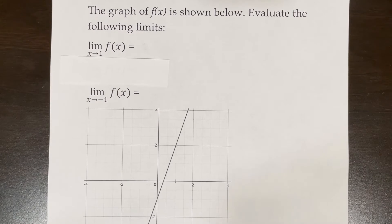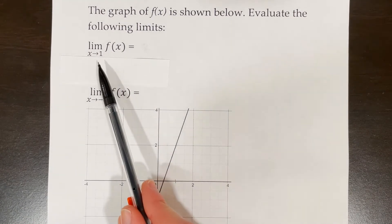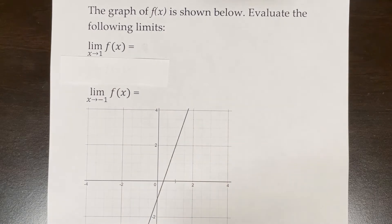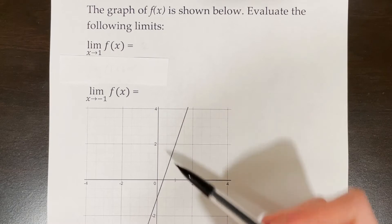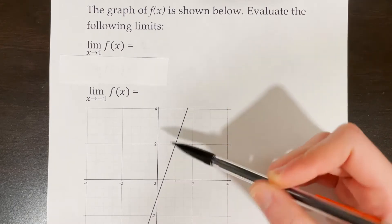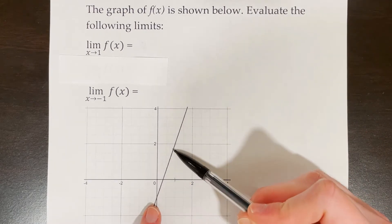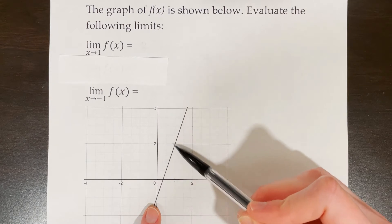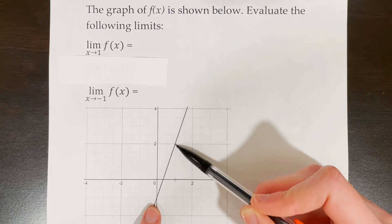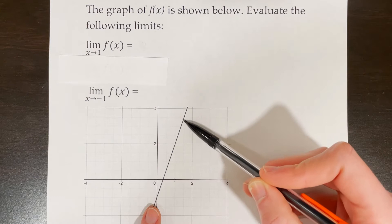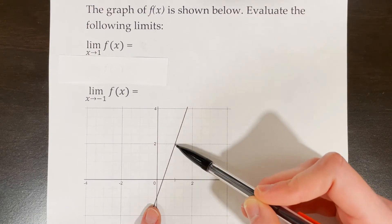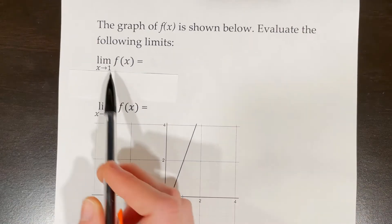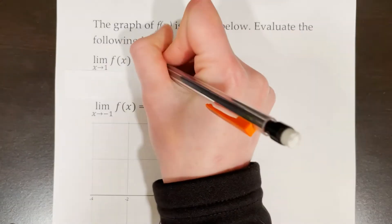The graph of f of x is shown below. Evaluate the limit of f of x as x approaches 1. For this problem we need to look at what the graph is approaching as it approaches x equals 1. From the left side it looks like the y-coordinate is approaching 2, and from the right side it also looks like the y-coordinate is approaching 2. That means the limit of f of x as x approaches 1 is equal to 2.